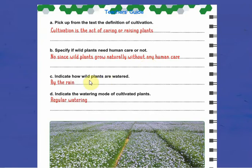How are wild plants watered? By the rain, because they don't need our care. We can also indicate that regular watering is the mode of cultivated plants.